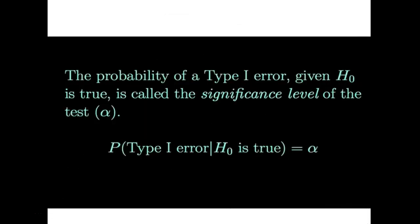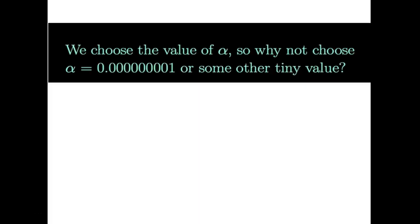So the probability of a Type I error is alpha. So we actually decide, we can decide how much risk we want to take of making this mistake. Now some people say well why not just make alpha crazy small because then it will never ever happen. And that does seem like something you could do.